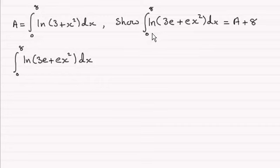And asked to show that the integral from 0 to 8 of the natural log of 3e plus e times x squared, integrated with respect to x, is now equal to A plus 8.